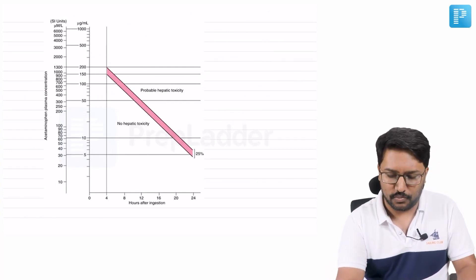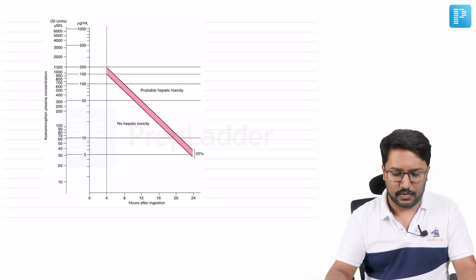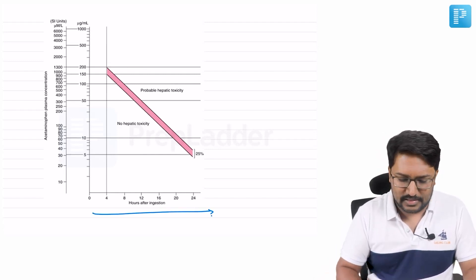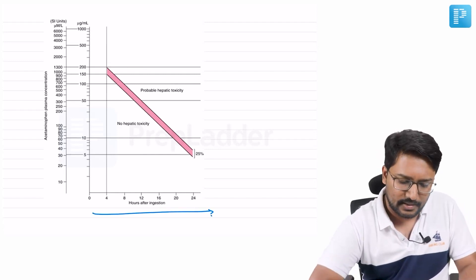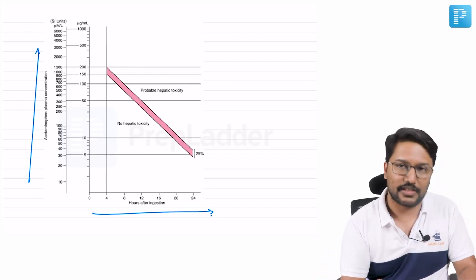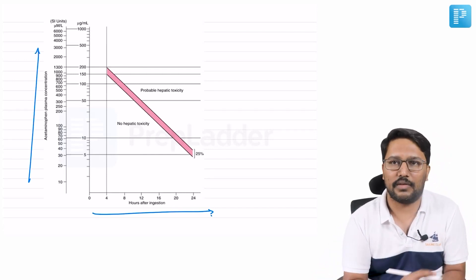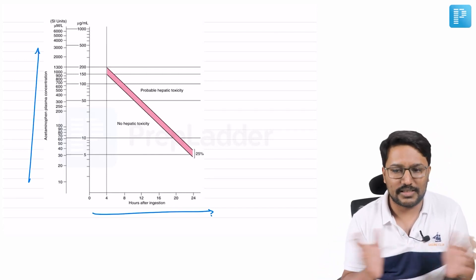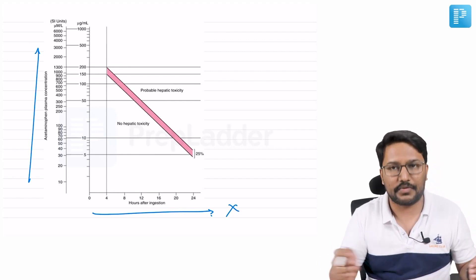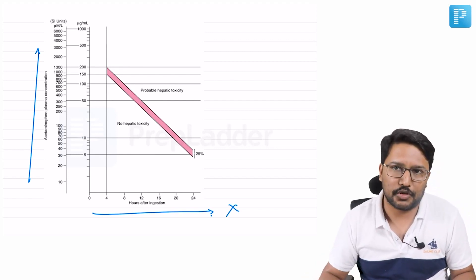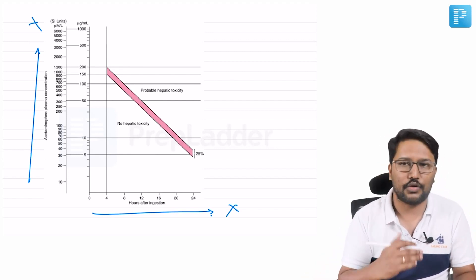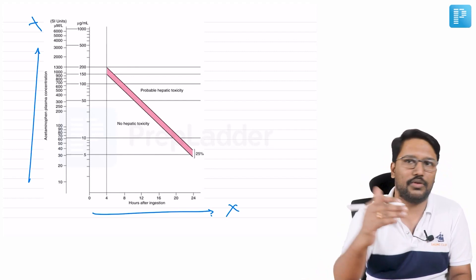The Rumack-Matthew nomogram plots time since consumption against plasma paracetamol (acetaminophen) levels. On the X-axis is time from consumption of paracetamol; on the Y-axis is the serum paracetamol level.